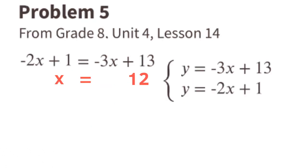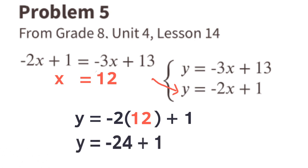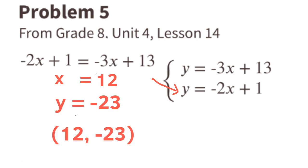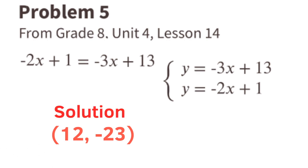Now that we know that x equals 12, we can substitute the x in this equation with the value 12. Now it reads y equals negative 2 times 12 plus 1, which is equal to y equals negative 23. Now we know that x equals 12 and y equals negative 23. That's the solution.